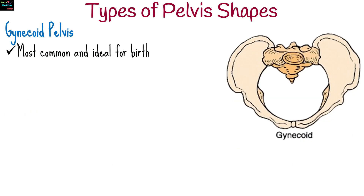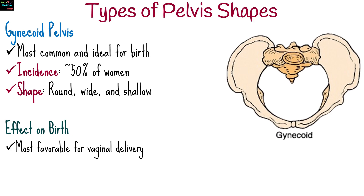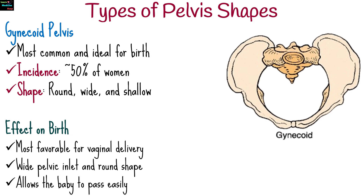First, the gynecoid pelvis. This is the most common type, found in about 50% of women. It is round, wide, and shallow, making it the most favorable for vaginal delivery. The baby can pass through easily due to the spacious pelvic inlet.